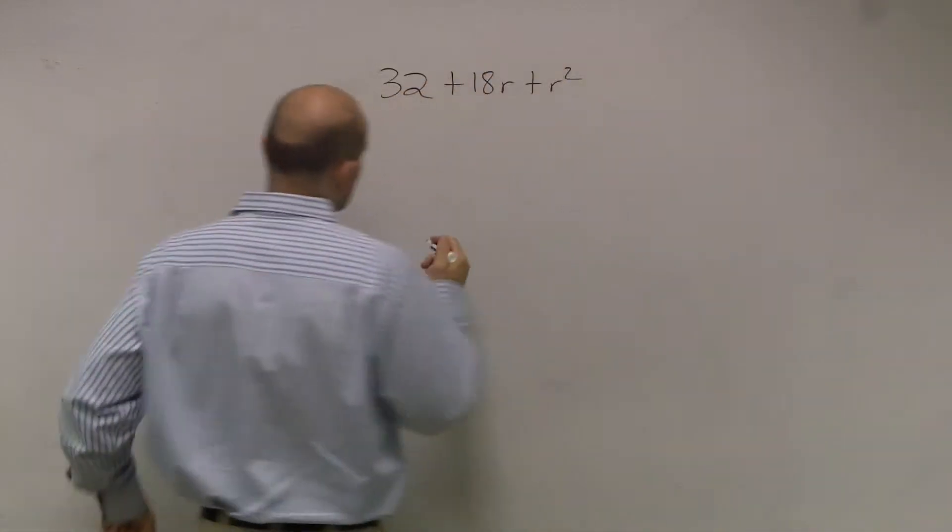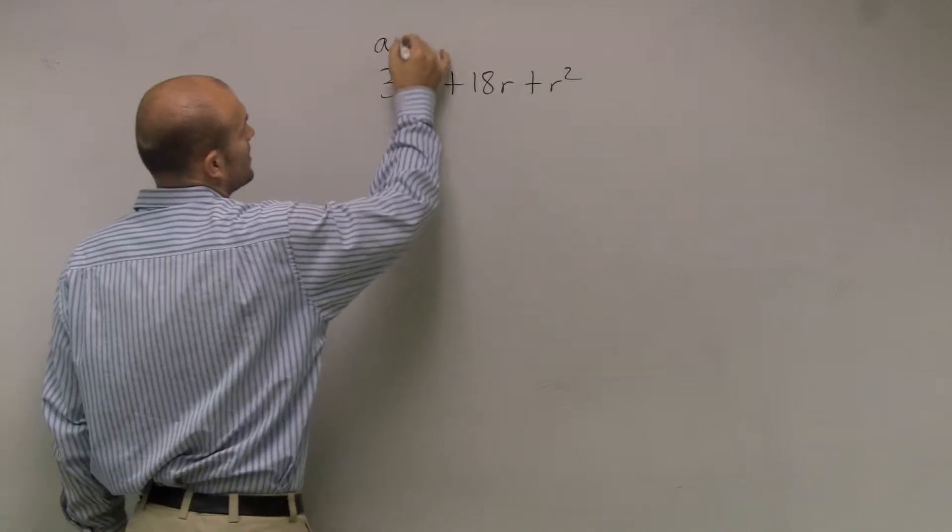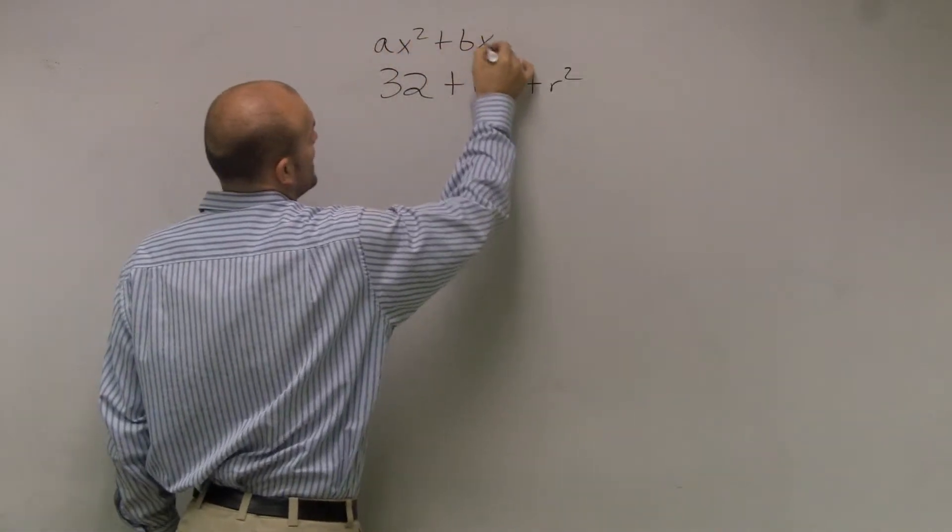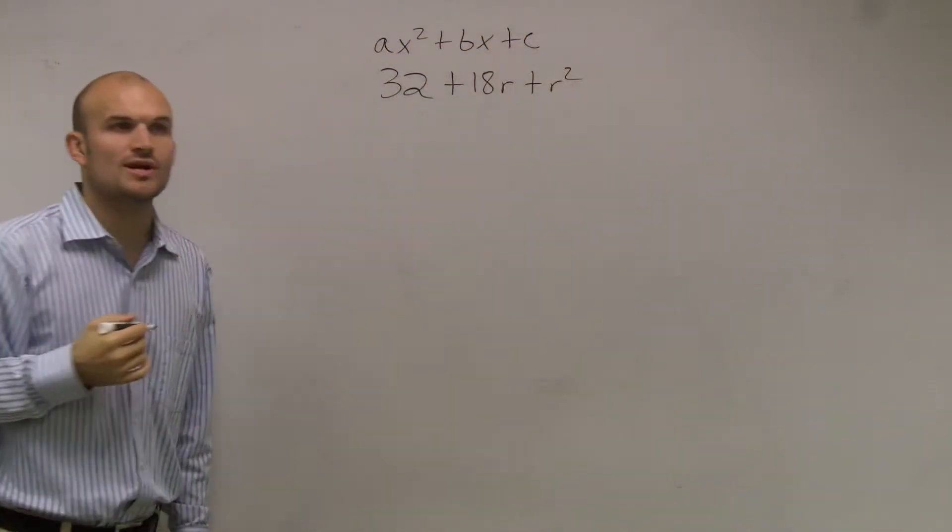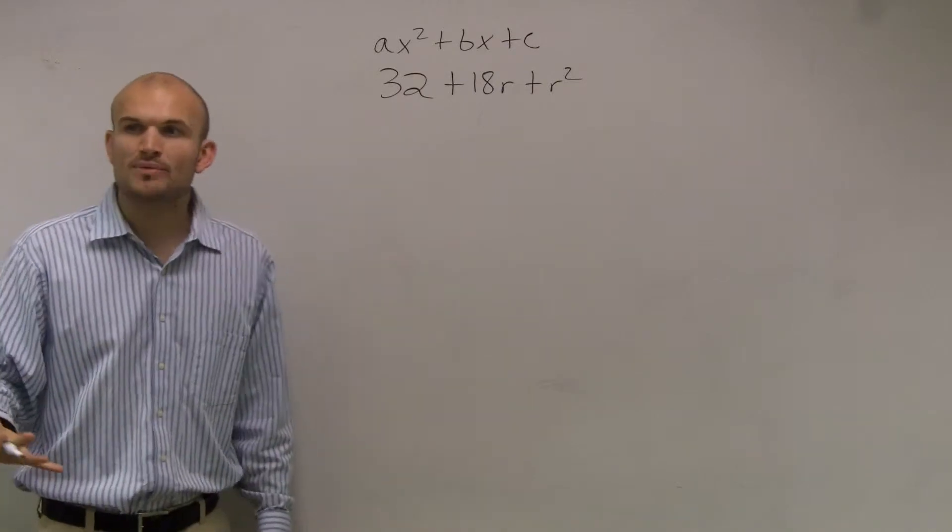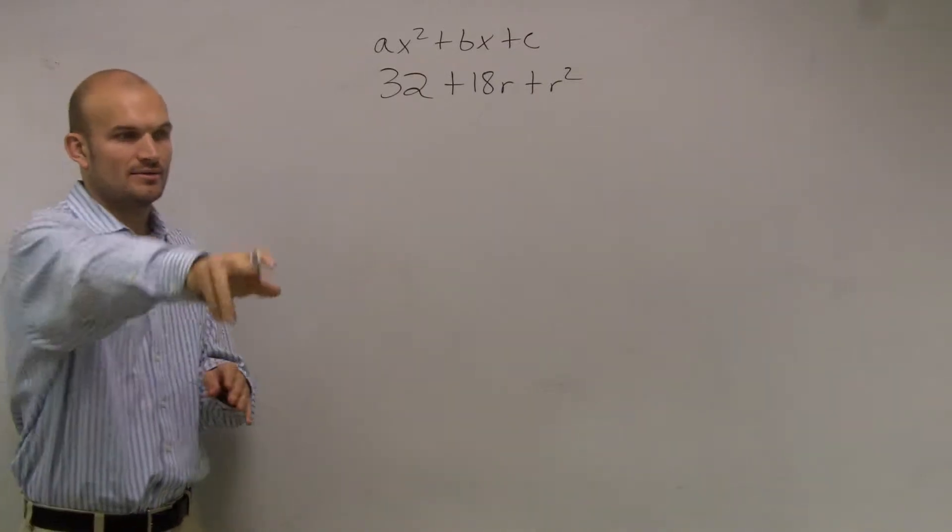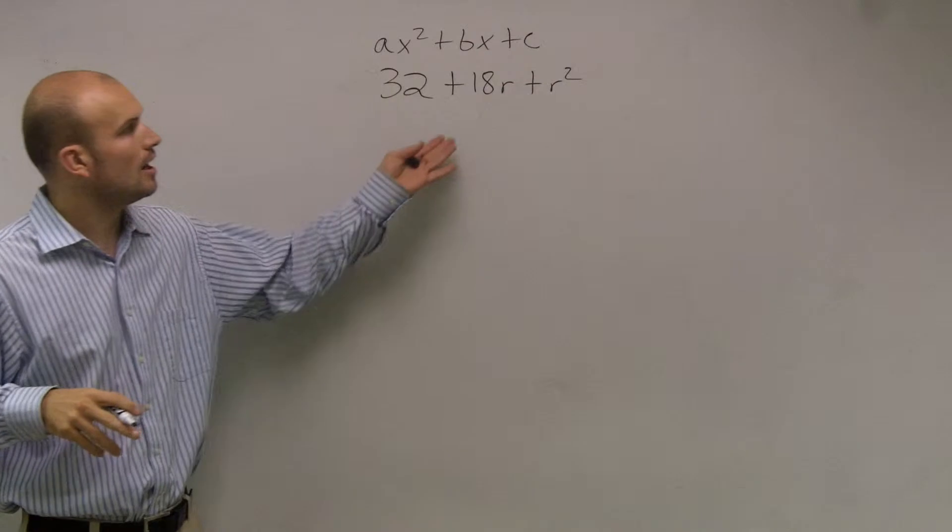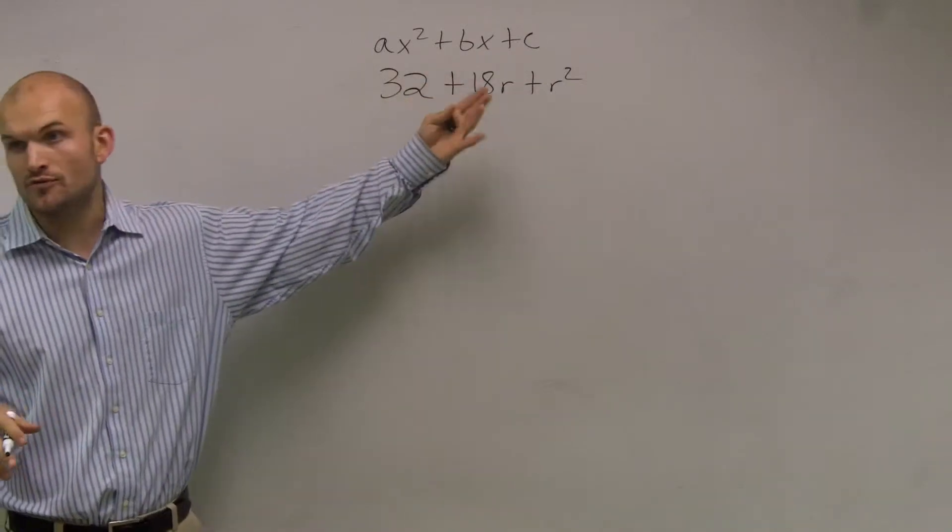Now when we were doing this, though, we were always using the form of ax squared plus bx plus c, which we call their quadratic form. And that helped us out because we could then determine what our b and our c were to figure out the problem.